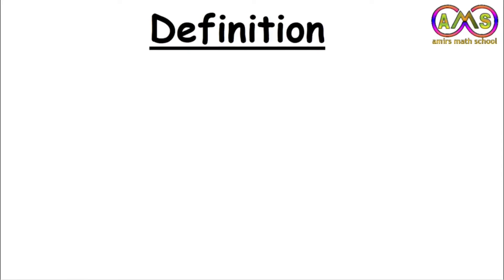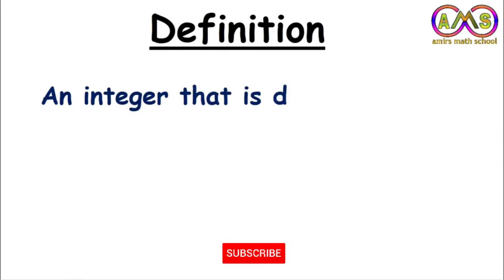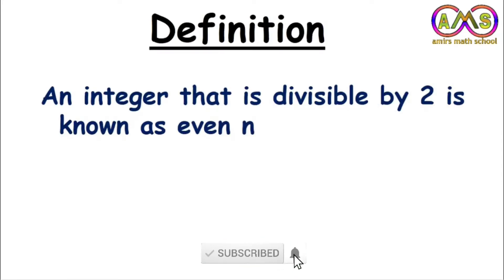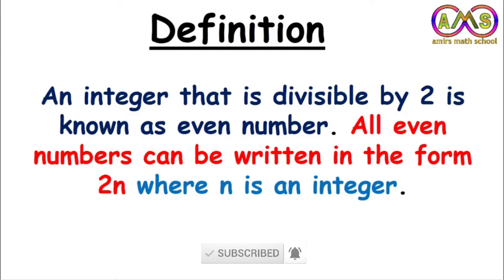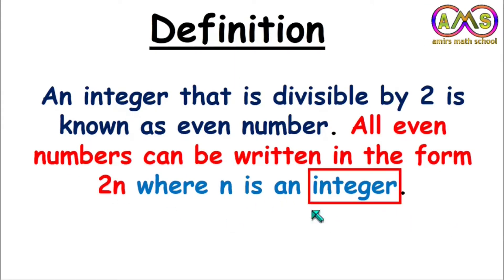Let's see the definition of even number. An integer that is divisible by 2 is known as an even number. All even numbers can be written in the form 2n, where n is an integer number. Here you see all even numbers can be written in the form 2n, where n is an integer number.